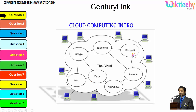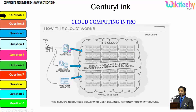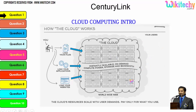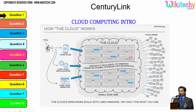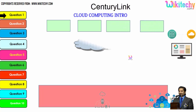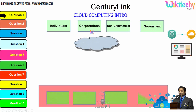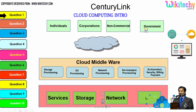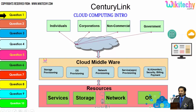Cloud computing is like renting servers or services and utilizing them. You can load files, applications, or your website so that any user can access it, and tracking or monitoring becomes really easy. There are different types of users — individuals, corporations, non-commercial organizations, and government — all of whom can access services, storage, networks, or operating systems via cloud middleware.